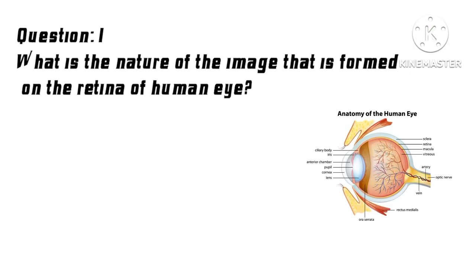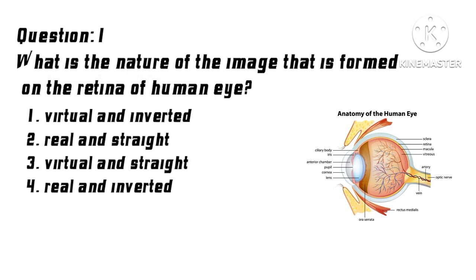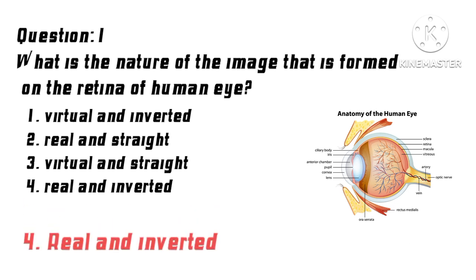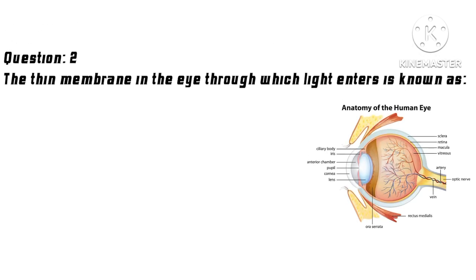Question 1: What is the nature of the image that is formed on the retina of the human eye? Options: 1. Virtual and inverted, 2. Real and straight, 3. Virtual and straight, 4. Real and inverted. Correct answer: 4. Real and inverted.